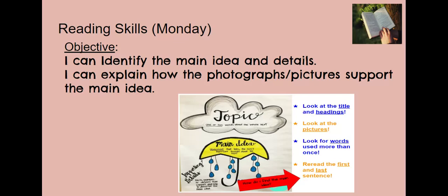Let's talk about main idea and topic for a second. Take a look at the anchor chart on the screen. The topic of a text is one or two words about the whole text. The main idea is a statement that tells the most important thoughts about the topic. The supporting details are facts, examples, or details that support and help to describe the main idea.